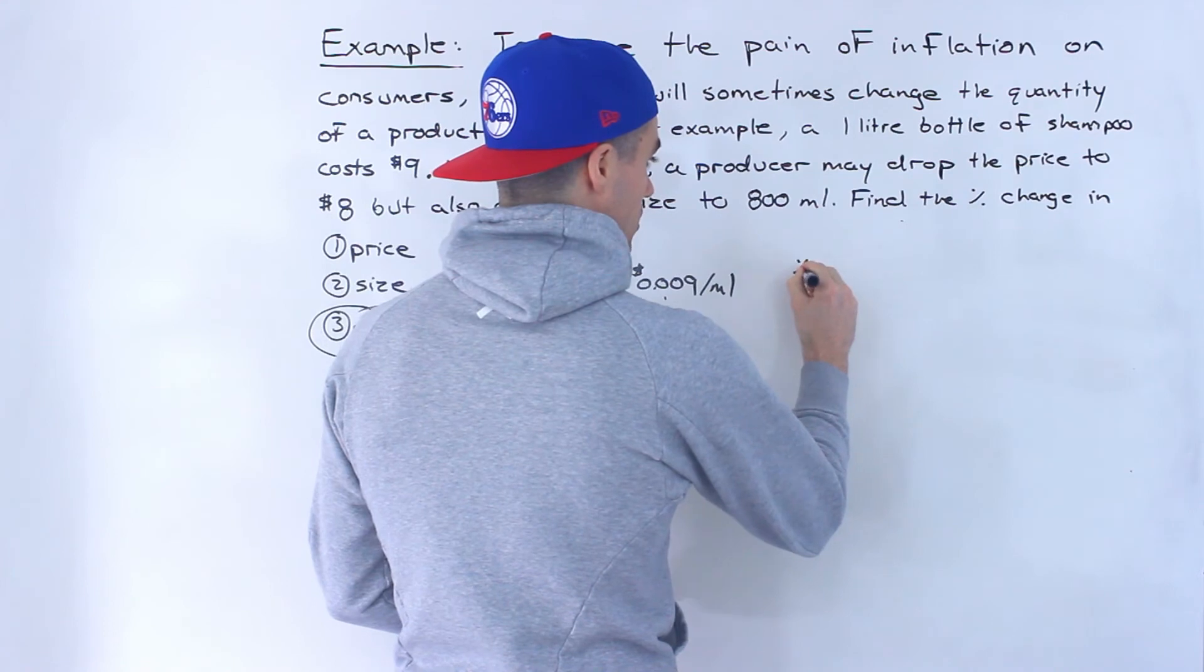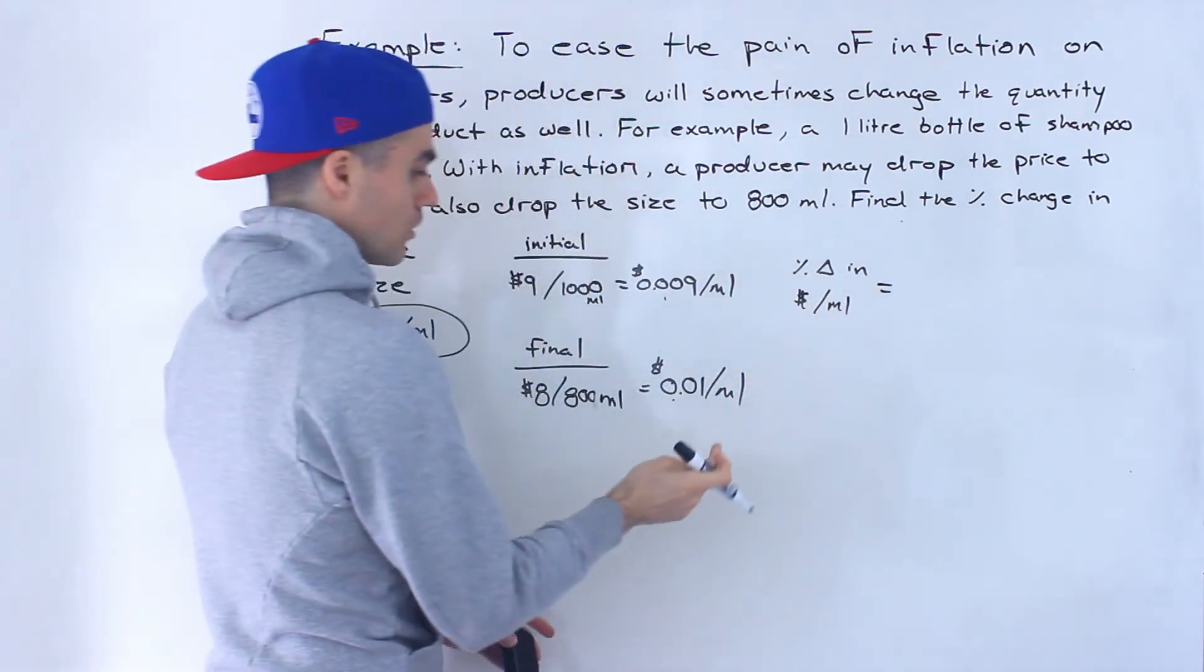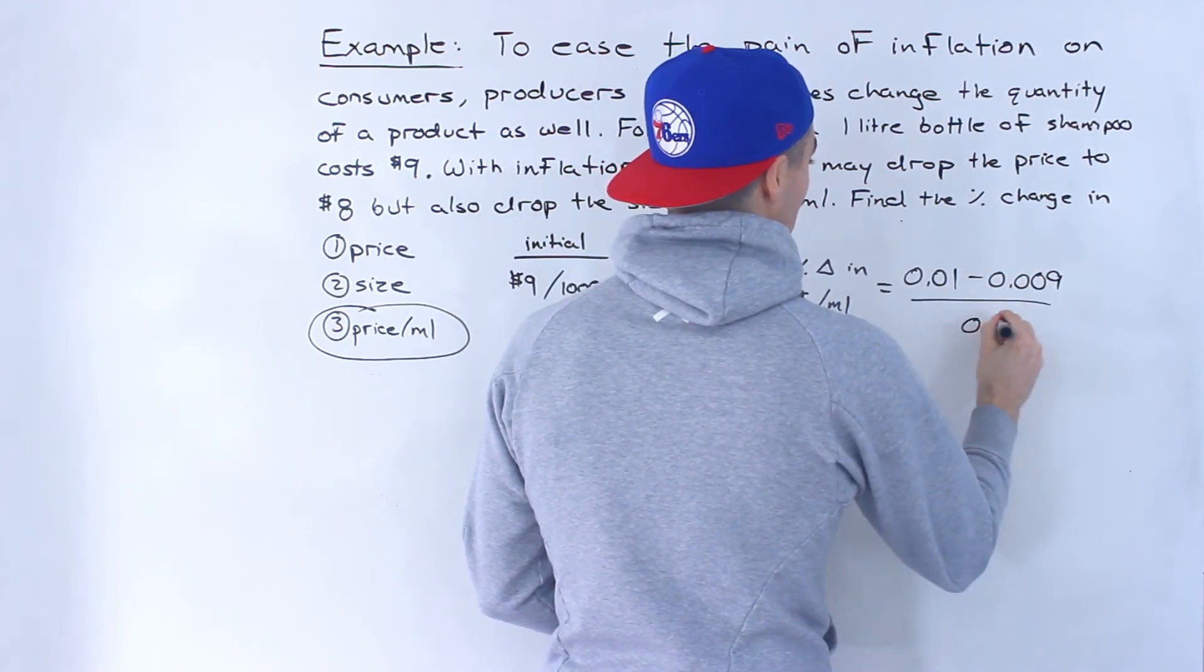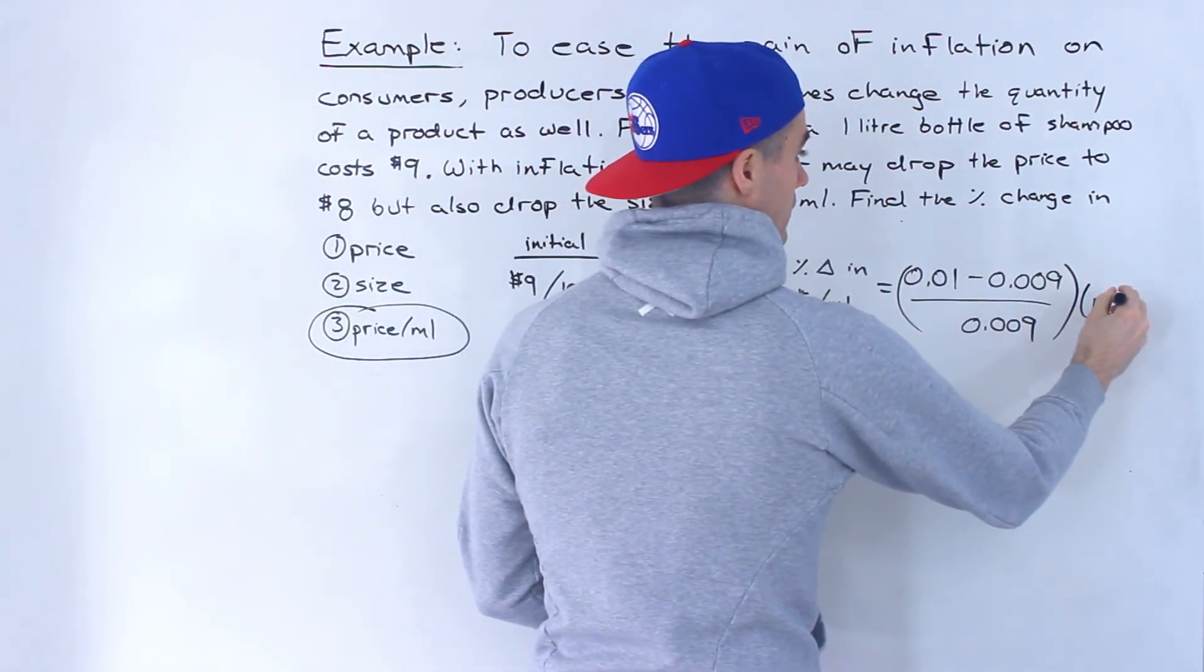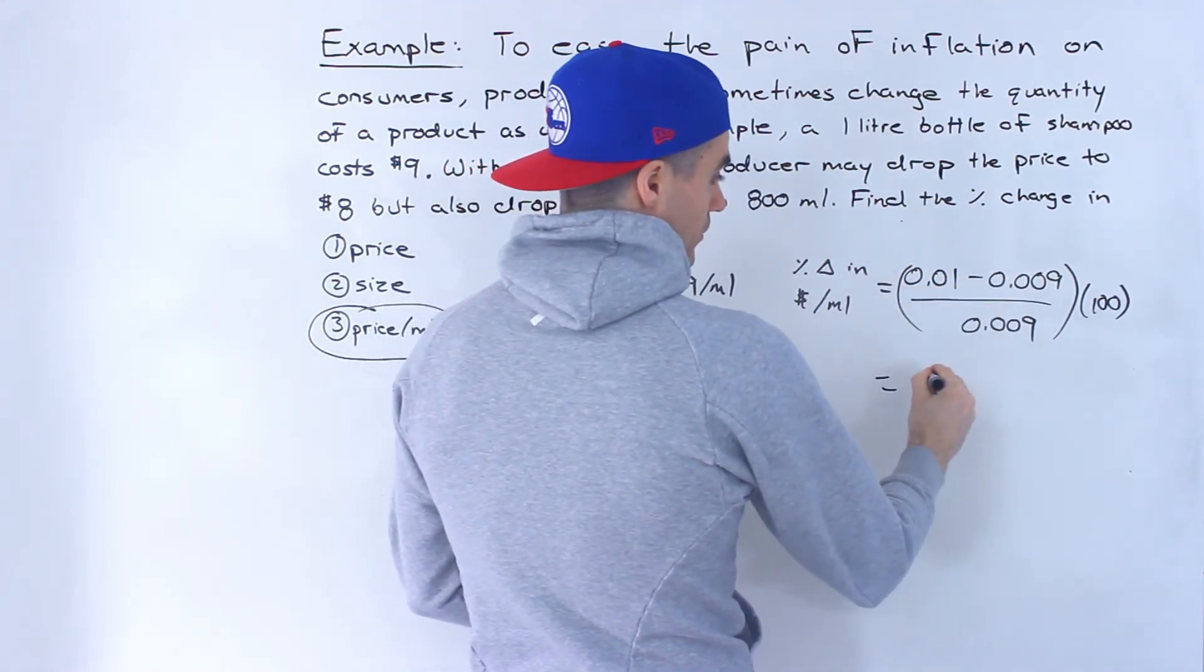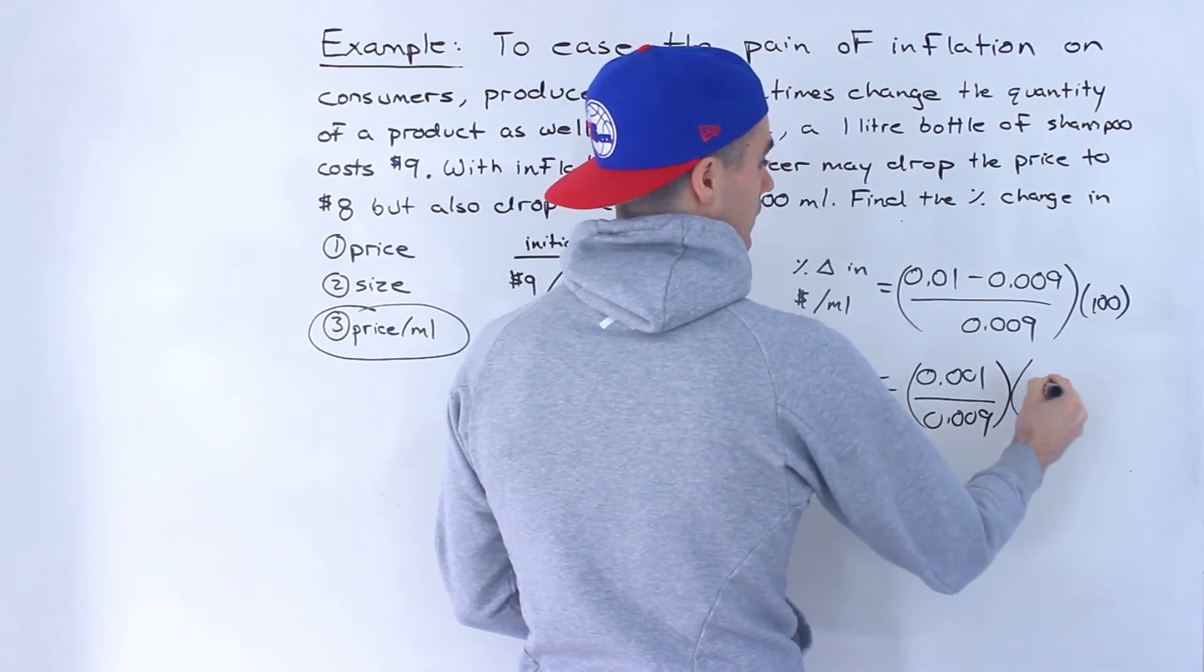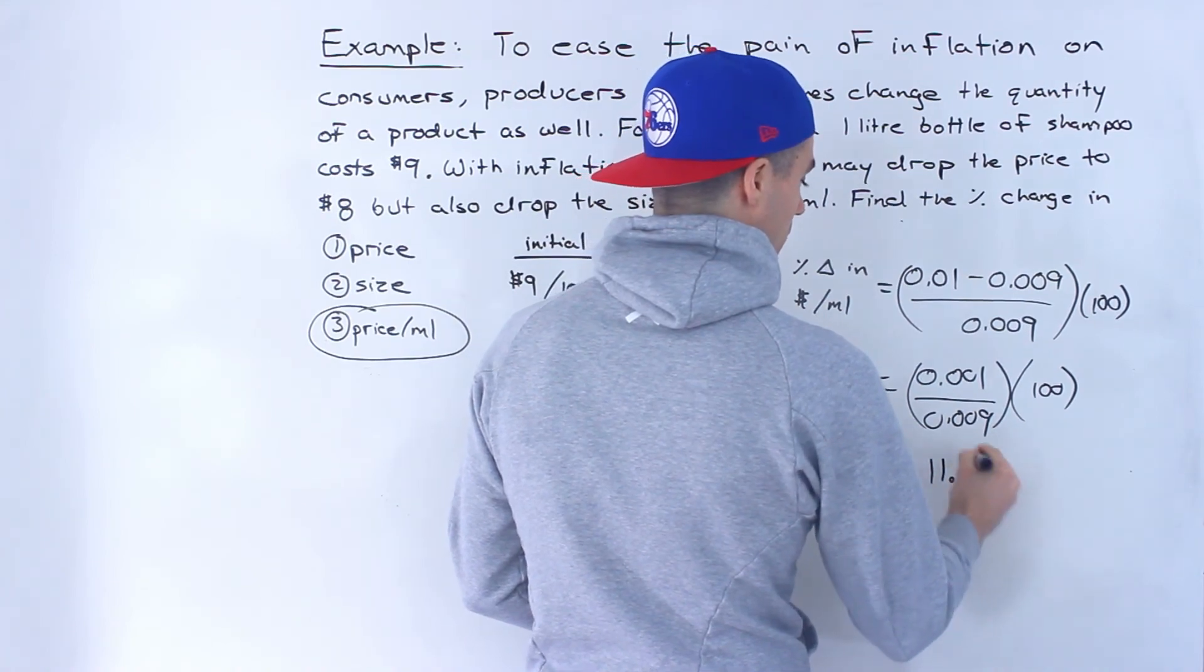So the percentage change in price per milliliter would equal the new value, 0.01 minus the old value, 0.009 divided by 0.009. And then we take that, multiply it by 100. And then when we do this, we would end up with 0.001 divided by 0.009, which is like 1 over 9, multiplied by 100. And that would give us positive 11.11%.